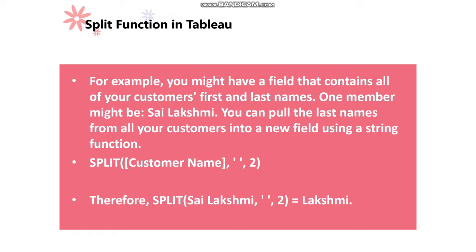If you want the first split, specify one; if you want the second, specify two. The number varies as per your requirement. So, split of 'Sai Lakshmi', comma, space in inverted commas, comma, two — equals 'Lakshmi'. Since we specified two, we get the second split, which is Lakshmi.